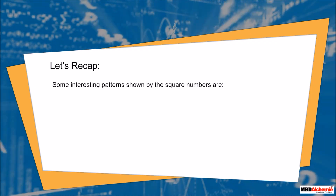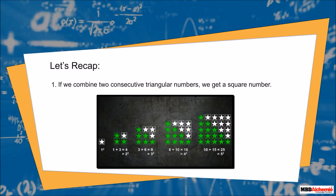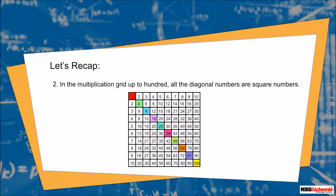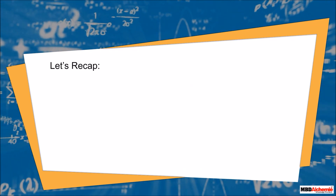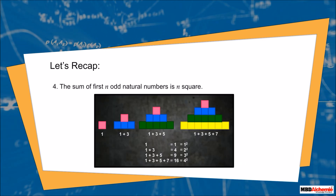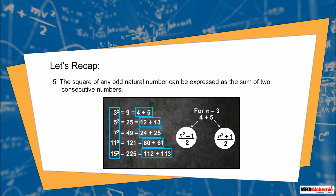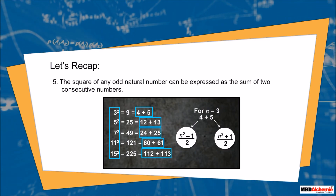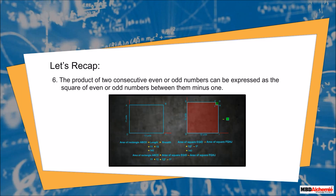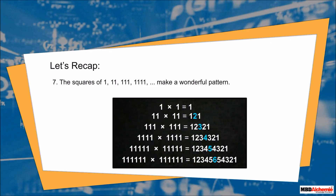Let's recap. Some interesting patterns shown by the square numbers are: if we combine two consecutive triangular numbers, we get a square number. In the multiplication grid up to 100, all the diagonal numbers are square numbers. There are 2n non-square numbers between the squares of n and n + 1. The sum of the first n odd natural numbers is n². The square of any odd natural number can be expressed as the sum of two consecutive numbers. The product of two consecutive even or odd numbers can be expressed as the square of the even or odd number between them, minus 1. The squares of 1, 11, 111, 1111, and so on make a wonderful pattern.